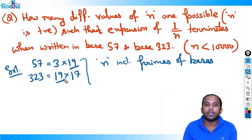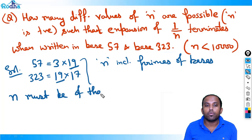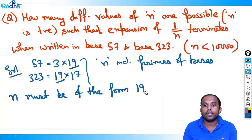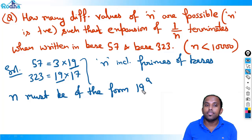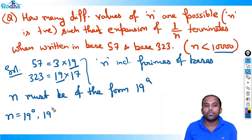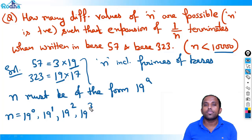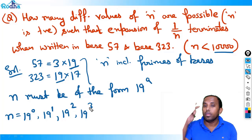That means n must be of the form 19^a — any power of 19 — since it satisfies both conditions. Since n < 10,000: 19^0=1, 19^1=19, 19^2=361, 19^3≈6859. So n can take 4 values (19^0 through 19^3). Going to 19^4 ≈ 130,321, which exceeds 10,000.